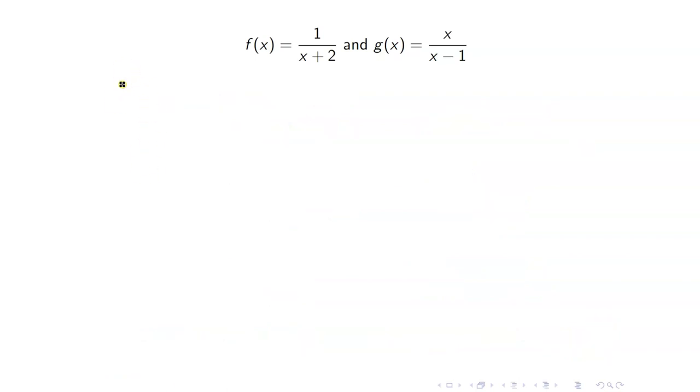Therefore, the domain of f circle g is the intersection of these two sets, which is the set of all real numbers with both 2 thirds and 1 removed.